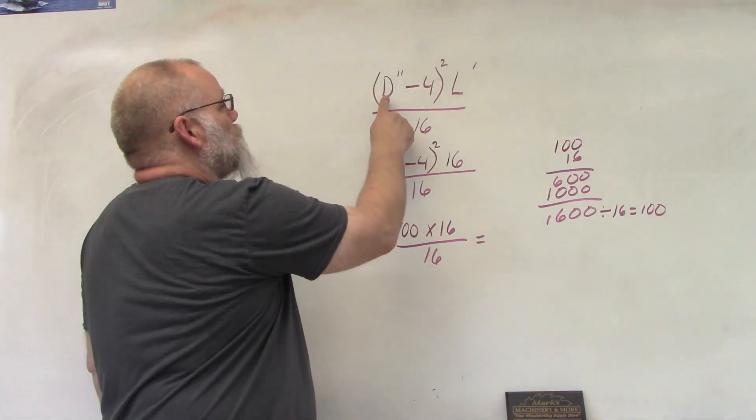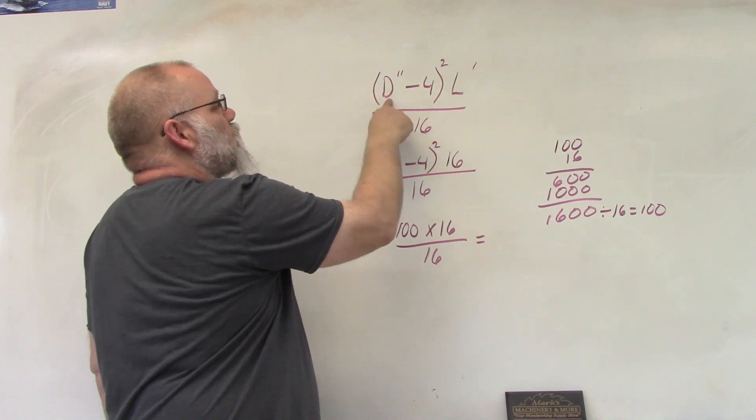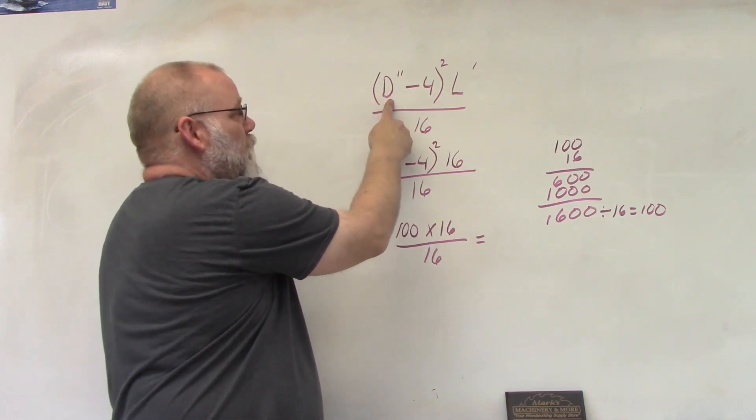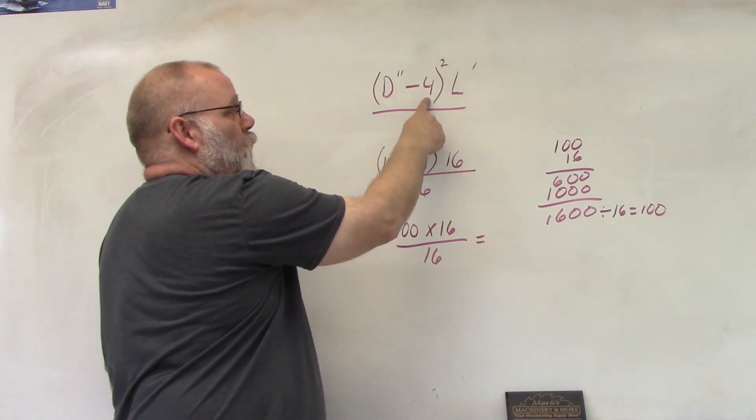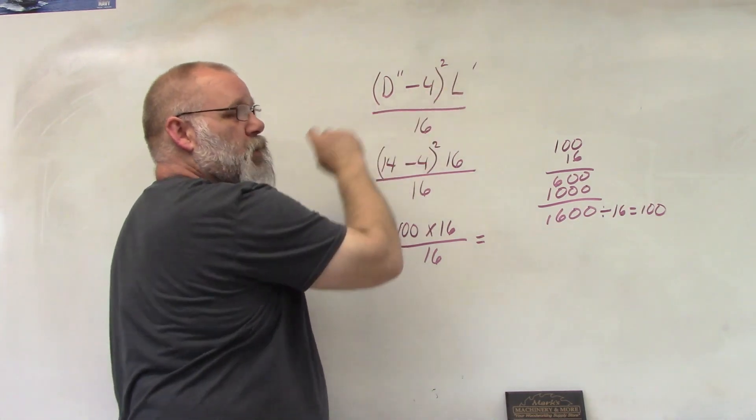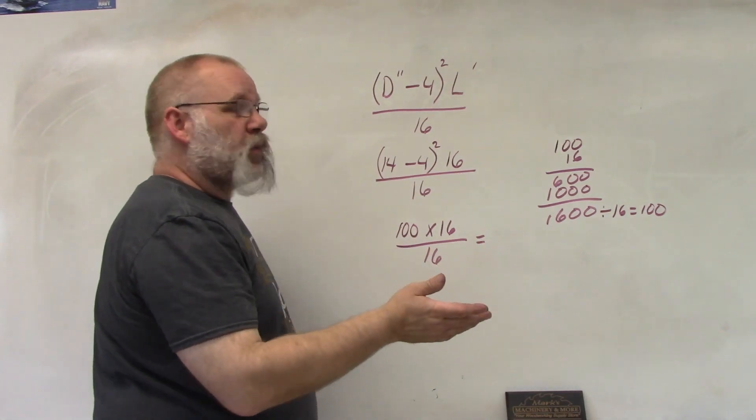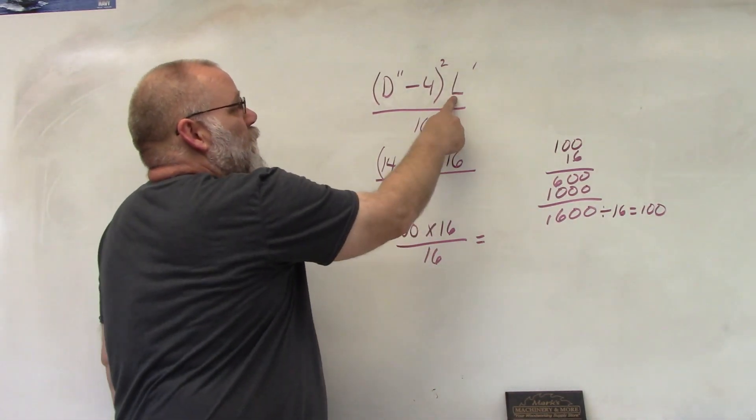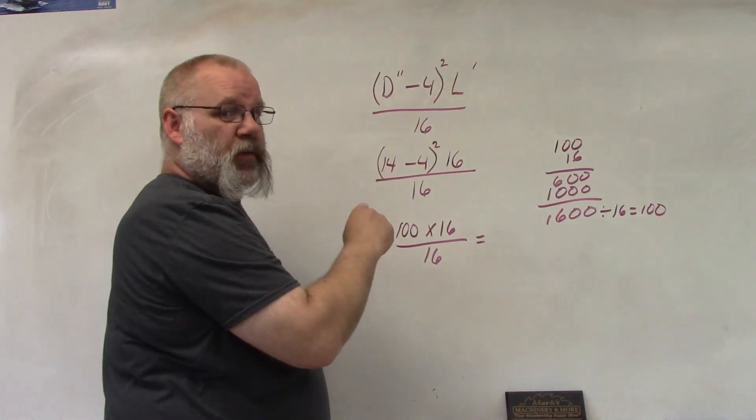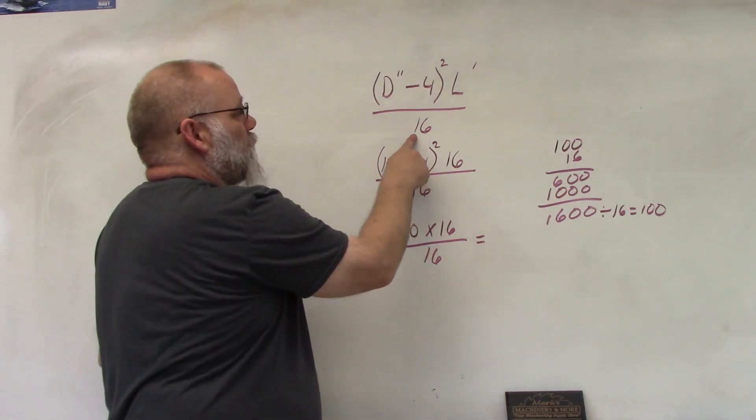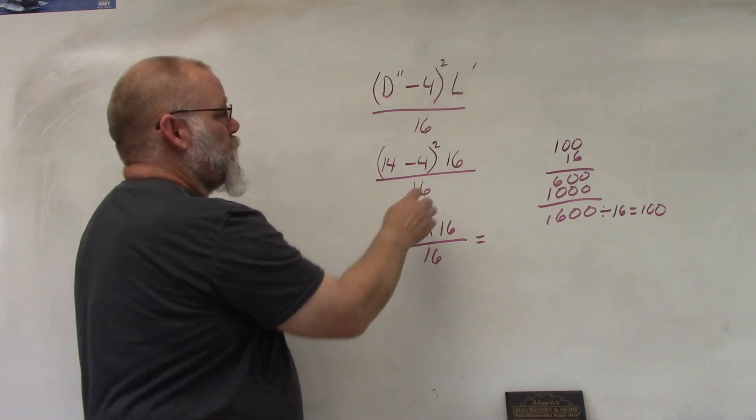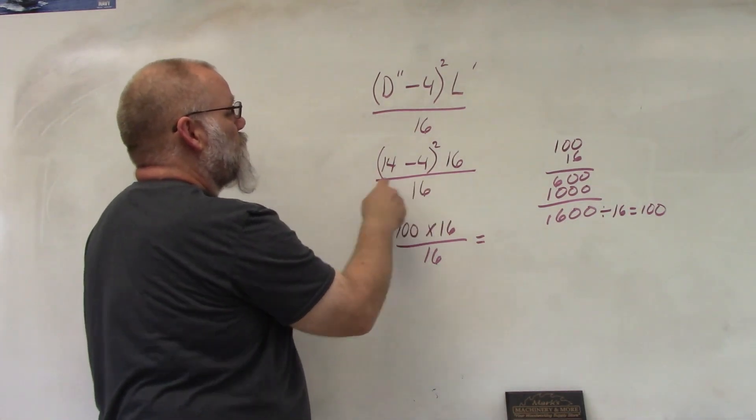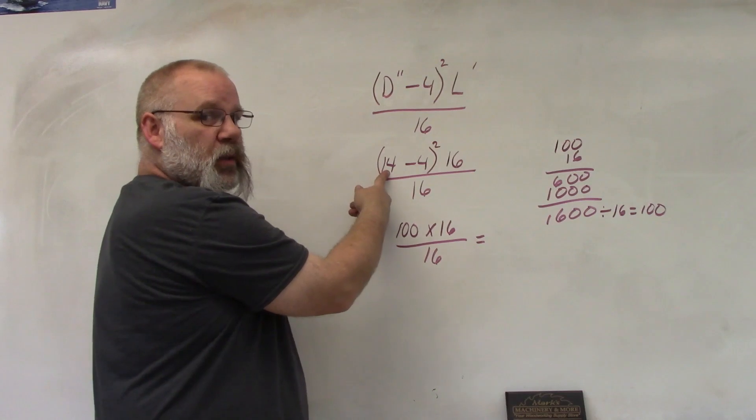...is D, which is the diameter of the tree in inches at the small end, subtract 4, and then you're going to square it—multiplied by itself—multiplied by the length in feet, and then you're going to divide by 16. So I picked a log that was 16 feet long and 14 inches in diameter.